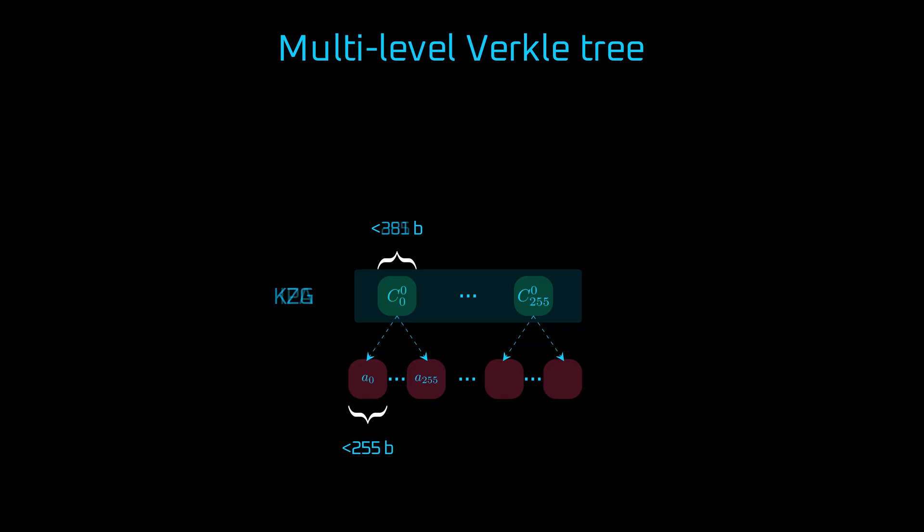Similarly, in IPA, the commitments are 255 bits, but the scalar field is only 253 bits. It turns out that in both schemes the EC points are too big to commit to, so we need to hash each commitment and truncate the hash down to the size of a scalar field.